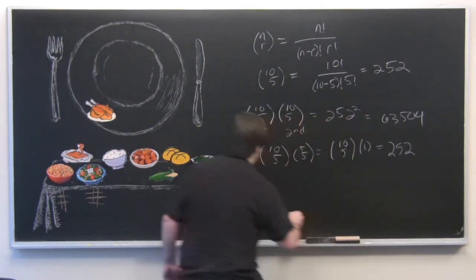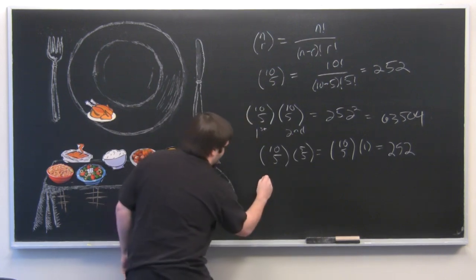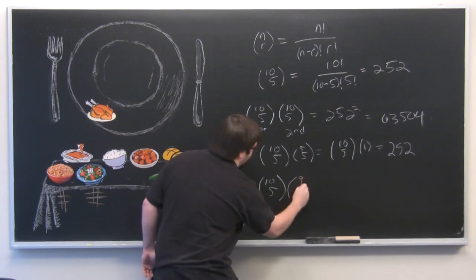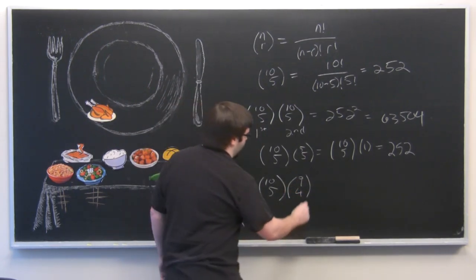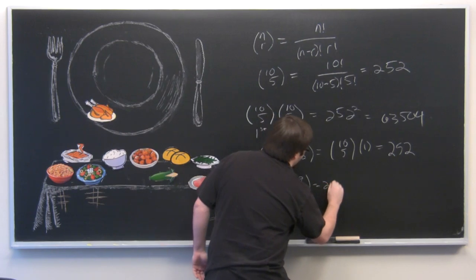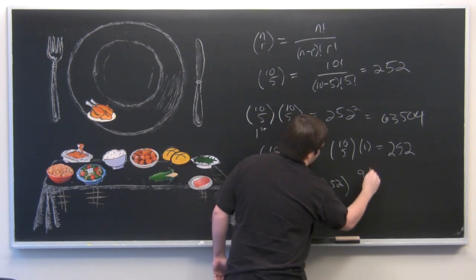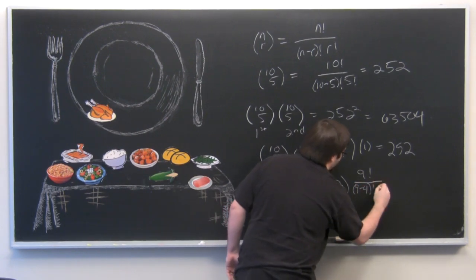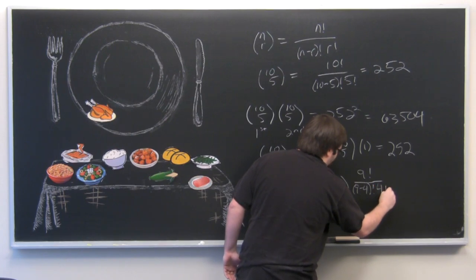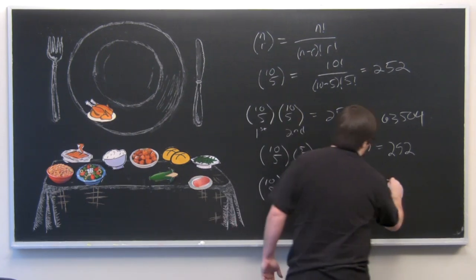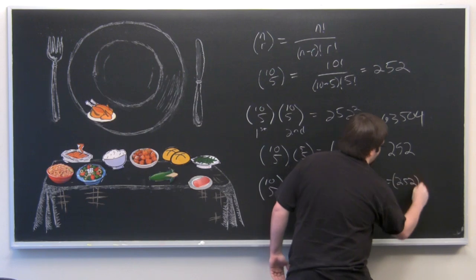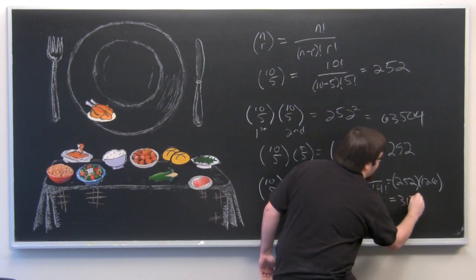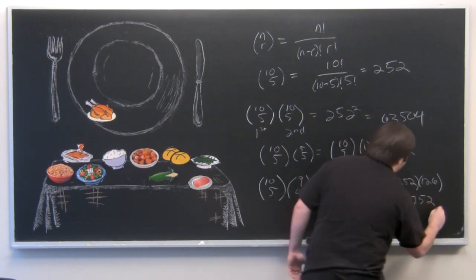So again, a combination problem. This time, we again had our ten choose five for the first one. And this time, we're picking four from nine. So this will just be 252 times, using our formula again, nine factorial, nine minus four factorial, times four factorial. This becomes 252 times 126, which is equal to 31,752.